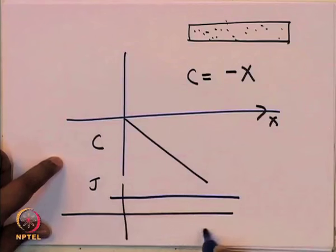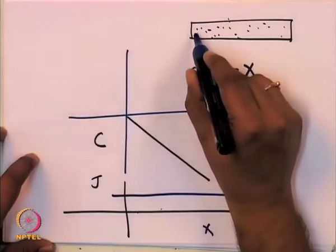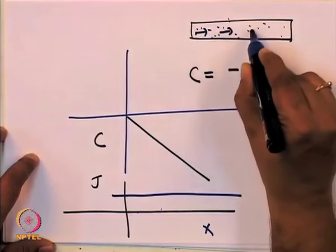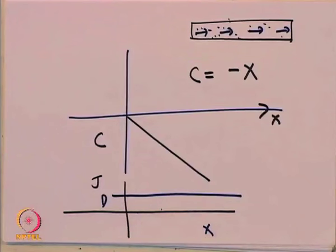If J is a constant D, then the flow here is the same as the flow everywhere along x. The flow at every point is the same — same amount flowing in, same amount flowing out.